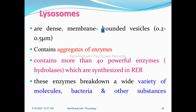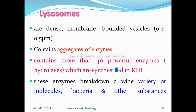This is an organelle called lysosomes. Lysosomes are dense membrane-bounded vesicles. They contain aggregates of enzymes — more than 40 powerful enzymes — which are synthesized in the rough endoplasmic reticulum. These enzymes break down a wide variety of molecules and bacteria.